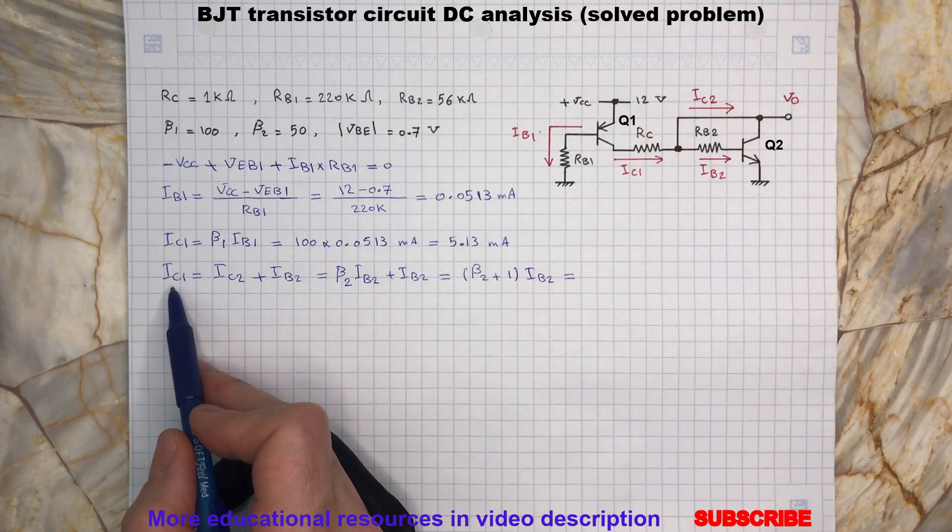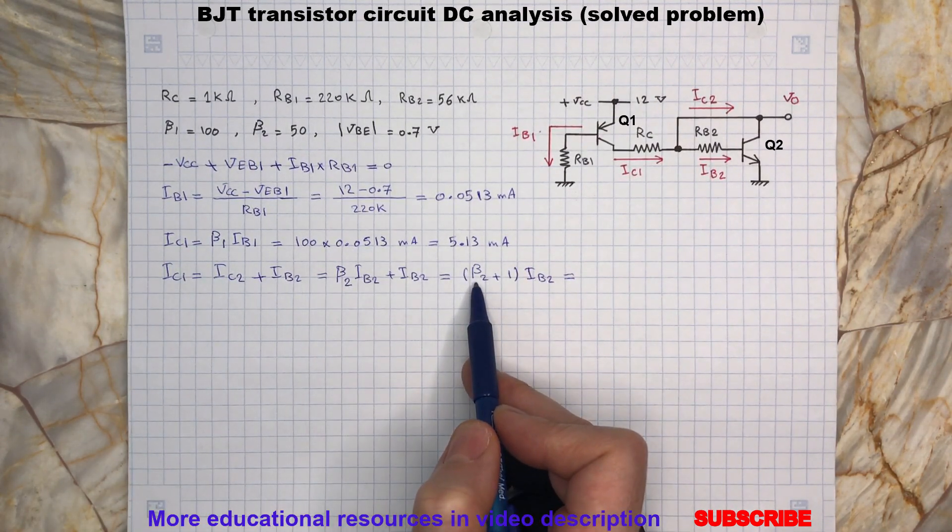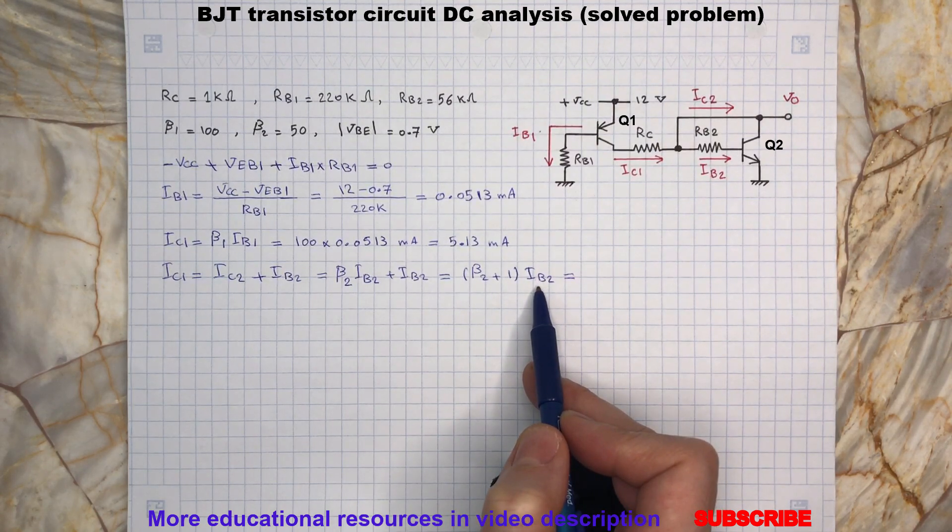Now IC1 is already found and we know beta2, so we can determine IB2.